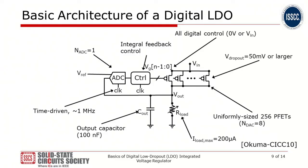This slide shows the very basic architecture of the digital LDO based on one of the earlier papers in this area. It employs an ADC which has essentially a one-bit count — this ADC is basically a single voltage comparator. It implements digital control, specifically integral feedback control, and produces the digital code that goes directly into the power transistor array. Therefore, it belongs to the all-digital control category. The dropout voltage of the LDO is 50 millivolts or more and the power transistor array consists of 256 uniformly sized PMOS transistors, giving an effective number of bits for the DAC of 8. This design supports a maximum current of 200 microamps with an output capacitor of 100 nanofarads. The ADC and controller are triggered by a synchronous clock at 1 megahertz.